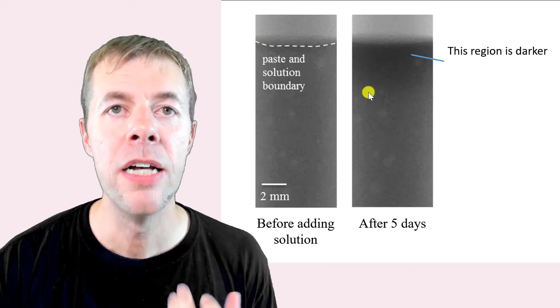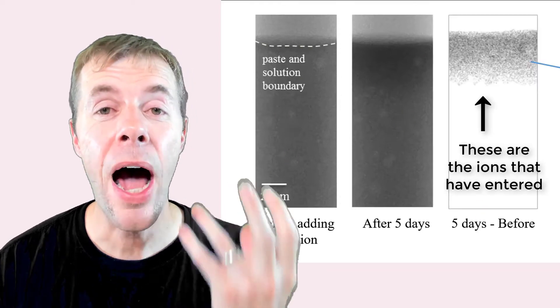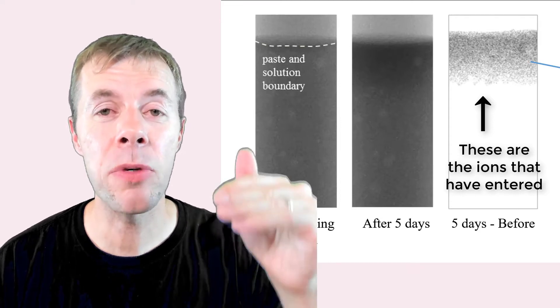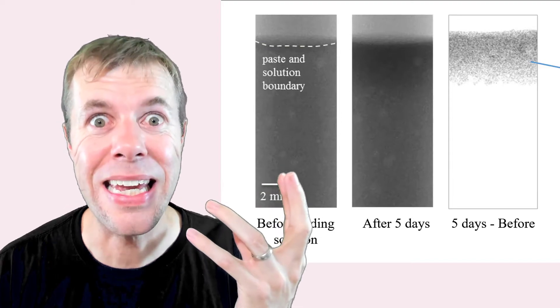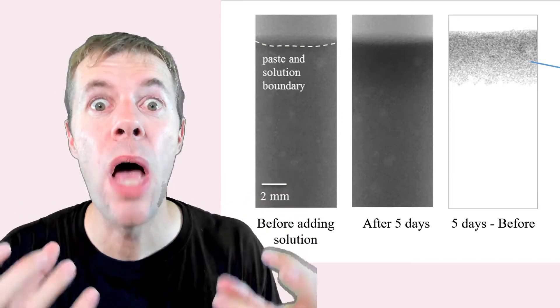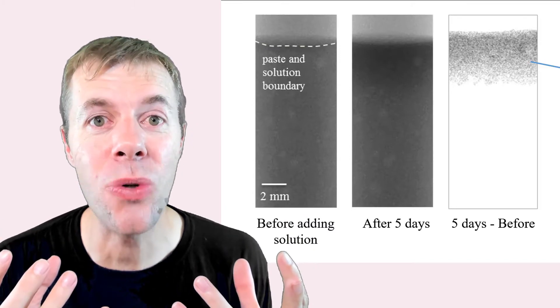We're going to take this image, subtract it from this image, and we get this picture. This is how much the outside chemicals have penetrated into the concrete. We're able to see the outside chemicals penetrating into the concrete and it's non-destructive.